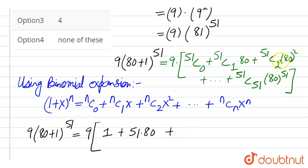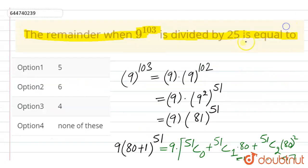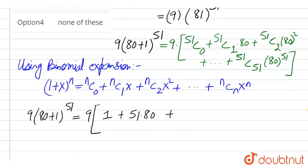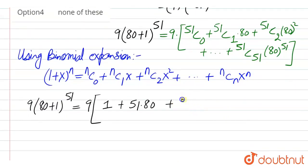So 80 squared is a number which is divisible by 25. So we can simply write all other terms as 25 into some number k. Here k is any integer. So this becomes...